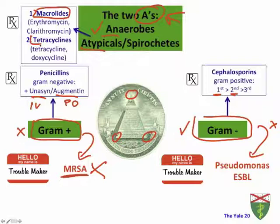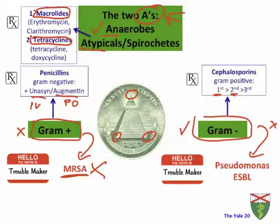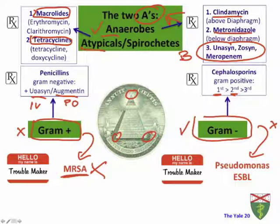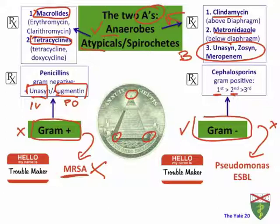For atypicals, two great choices are macrolides and tetracyclines. Examples of macrolides are erythromycin and clarithromycin. Examples of tetracyclines are tetracycline and doxycycline, which also work against spirochetes. For anaerobes, remember three antibiotics: clindamycin — classically for bacteria above the diaphragm; Flagyl — classically for bacteria below the diaphragm; and broader spectrum options: Unasyn, as well as Zosyn and meropenem, which are your big gun antibiotics.